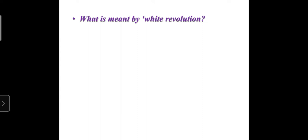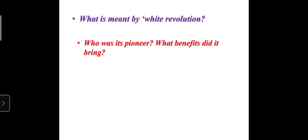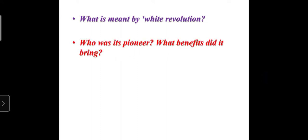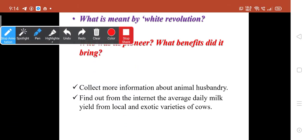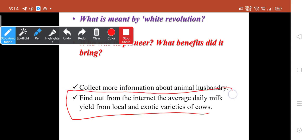You have to find out what is meant by white revolution, how it originated, who was the pioneer, and what benefits it brought. From the internet, find out the average daily milk yield from local and exotic varieties of cows. You can also check at your village how much milk is produced by a cow shed and submit that information.